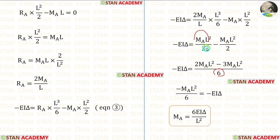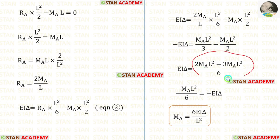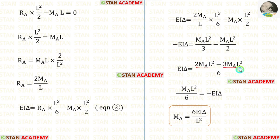Here, we can take LCM. Let us keep 6 as common. We have to multiply this term with 2 on the numerator and denominator, and this term with 3 on the numerator and denominator. Finally, we will get: 2MAL² minus 3MAL² equals minus MAL².